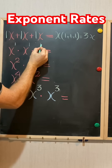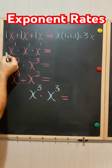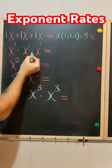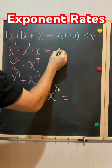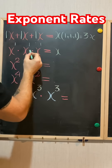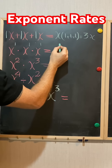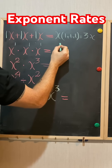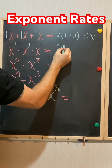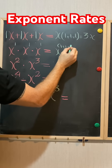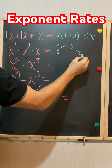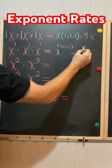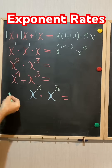x times x times x, which means x to the power of 1 times x to the power of 1 times x to the power of 1. Same base — write the base and add the exponents. It's gonna be x to the power of 1 plus 1 plus 1, equals x to the power of 3.